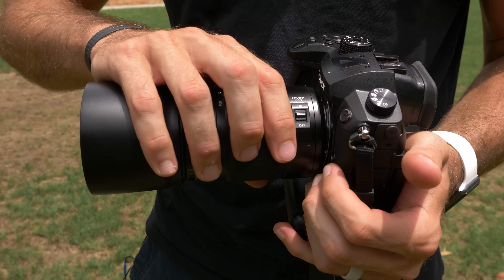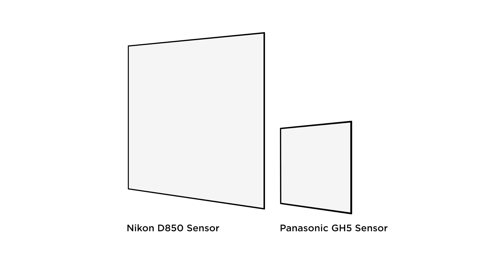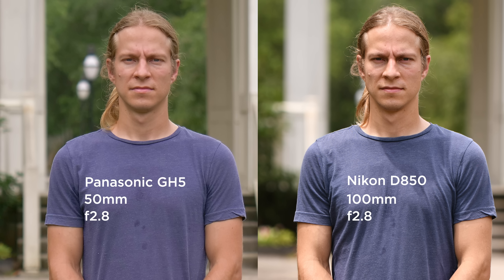Now let's say we wanted to create the exact same field of view with both cameras. There are only two options: we could change the lens and use a 50mm lens on the micro four-thirds camera instead, or we could back the camera up to get the entire scene. Let's do both. I've left the camera in the exact same place but switched from the 100mm lens to a 50mm lens, which will produce the same field of view on the different-size sensor. As you can see, we've created two images with the exact same field of view, but if we zoom in, the D850 does have a shallower depth of field. That's not because the sensor is bigger — it's because we used a longer lens.